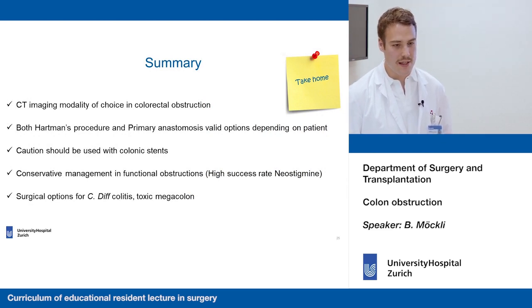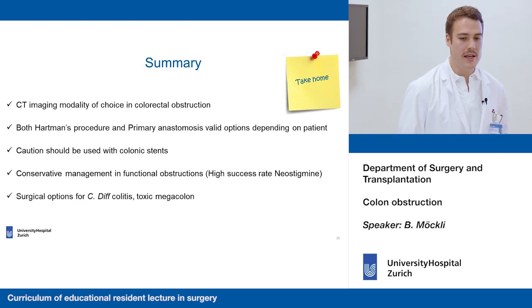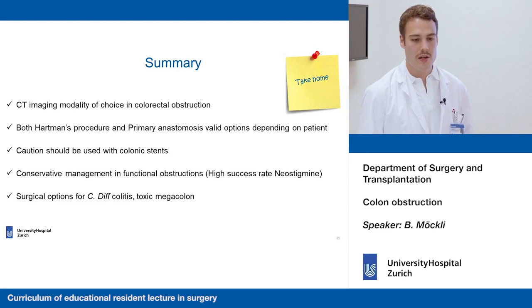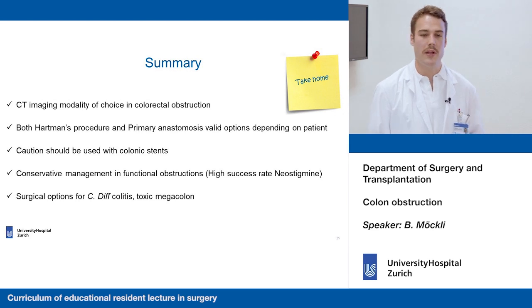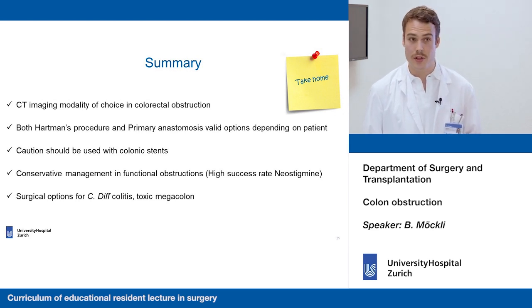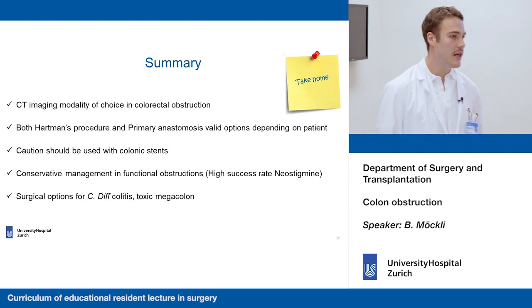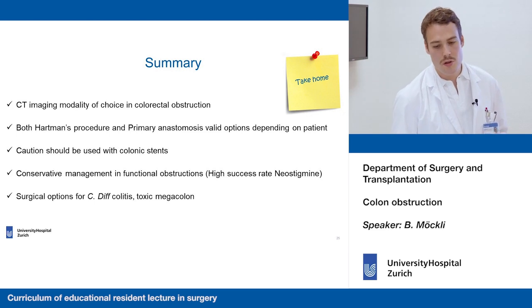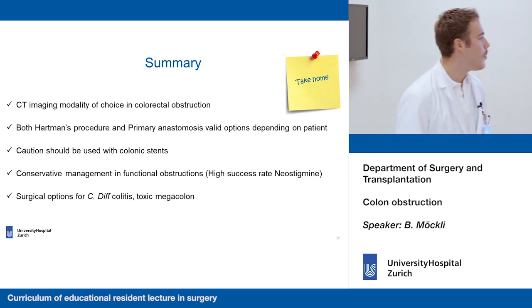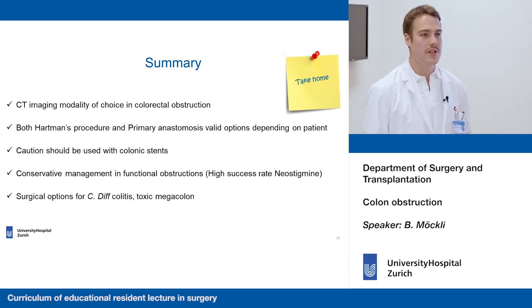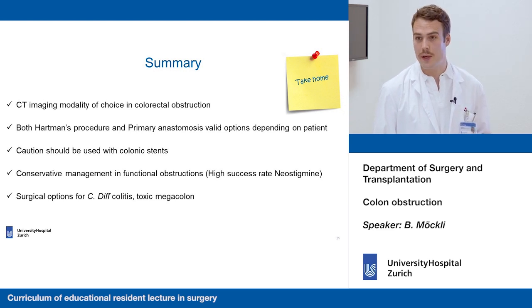At the end of the presentation, some take-home messages: CT imaging is the modality of choice in colorectal obstruction. Both Hartmann's procedure and primary anastomosis are valid options depending on the patient population and presentation. Caution should be used with colonic stents. Conservative management is at the forefront for pseudo-obstructions, with neostigmine having high efficacy. Different surgical options exist for pseudocolitis and these patients need to be evaluated for surgery given the possible fulminant course.